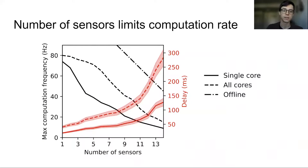The last thing to note is that the number of sensors limits computation. Because this is real time, if you have more sensors, the computation rate is lower than fewer sensors. We also have an offline mode where you can just record the IMU data and then compute kinematics later and you can operate at a much faster frequency.